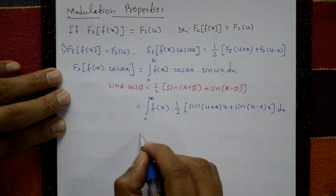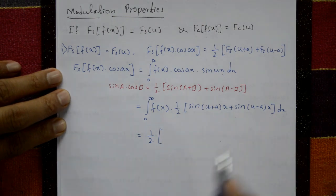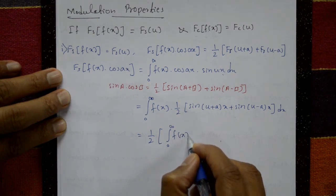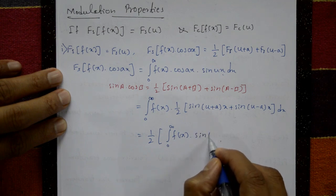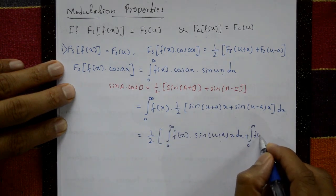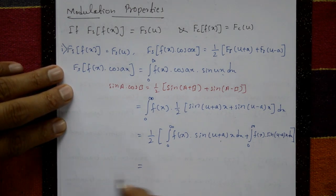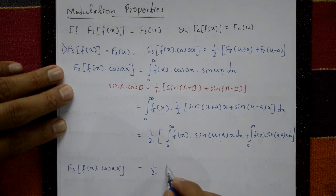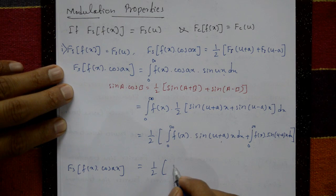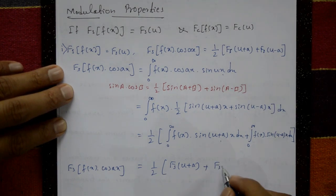Taking (1/2) outside and separating the terms: (1/2) times integration from 0 to infinity of f(x) sin(u+a)x dx plus integration from 0 to infinity of f(x) sin(u-a)x dx. Using the definition, this equals (1/2)[Fs(u+a) + Fs(u-a)], which is the required right-hand side.